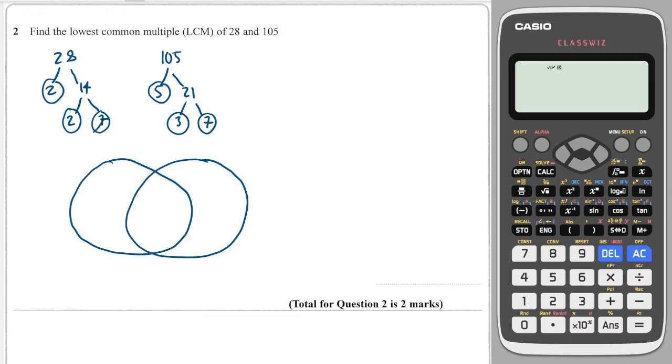They only share 7, so that 7 goes into the middle. And then 28 has 2 and 2, and 105 has 5 and 3 left over. The lowest common multiple is multiplying everything inside the Venn diagram, so we multiply using our calculator and we get 420. That's our answer.